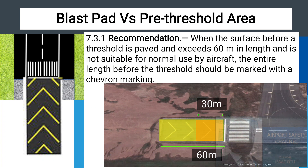A paved blast pad less than 60 meters may not require or have chevron marking. So if you see a blast pad that does not have a chevron marking, it tells you that the length of that blast pad is less than 60 meters and therefore it is not actually recommended. Even a blast pad may not be paved in the first place; it may be compacted sufficiently to resist erosion and not paved, and therefore may not be marked.